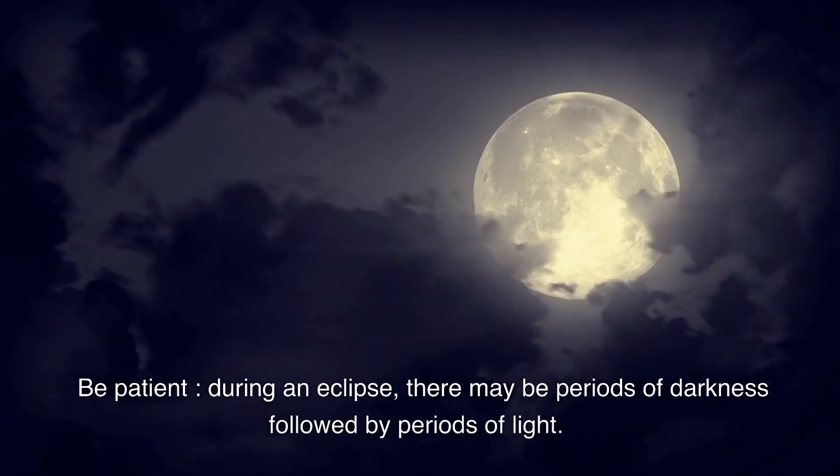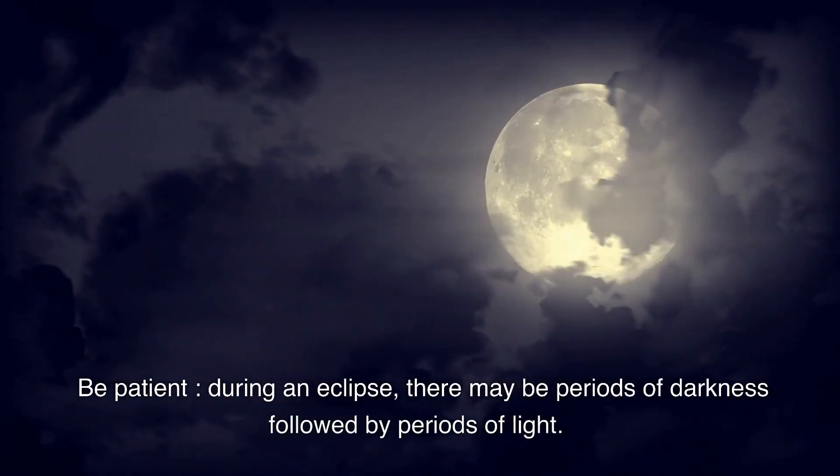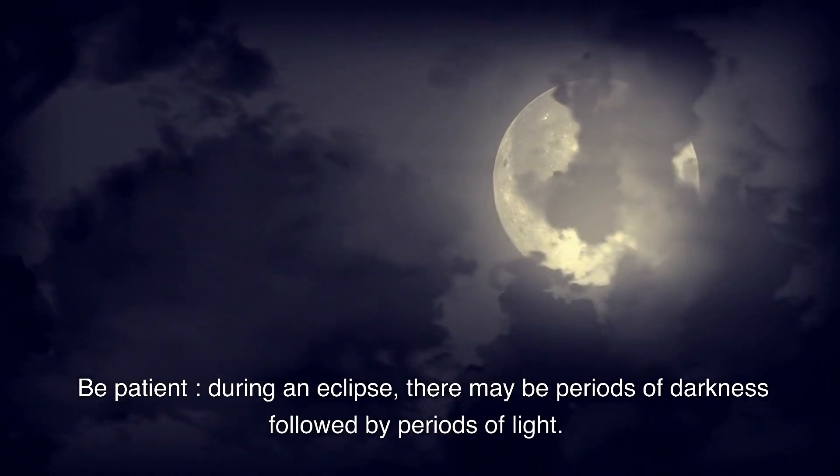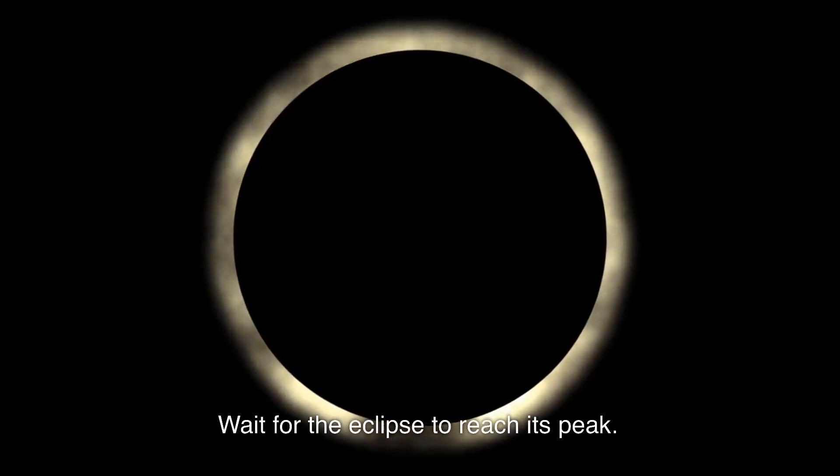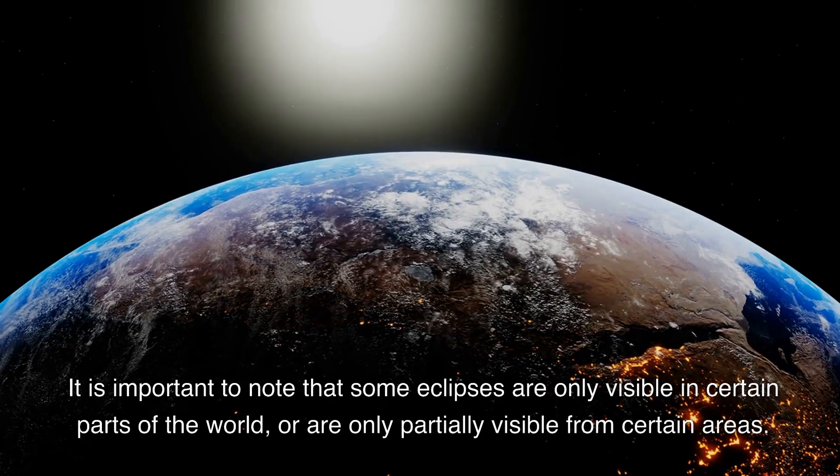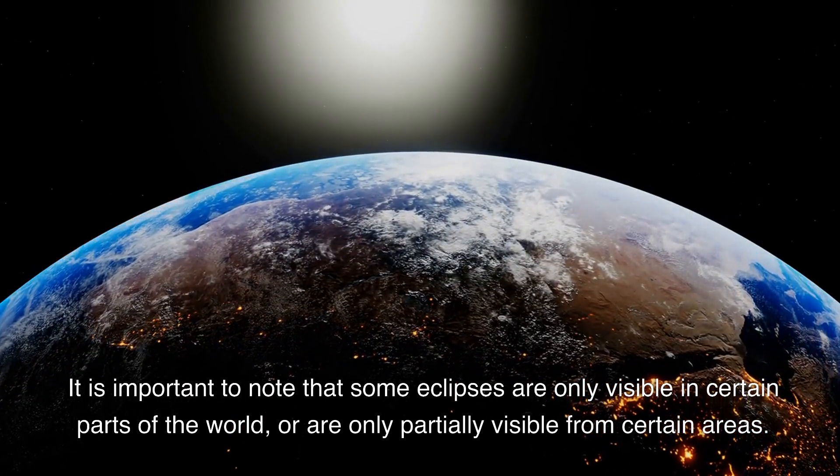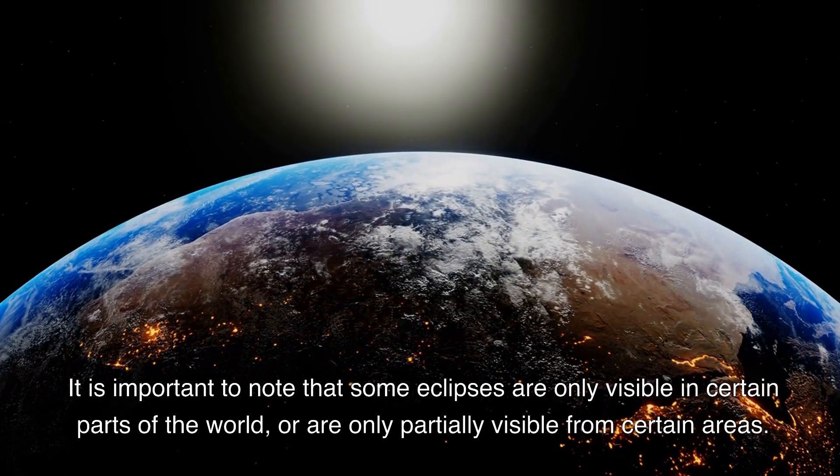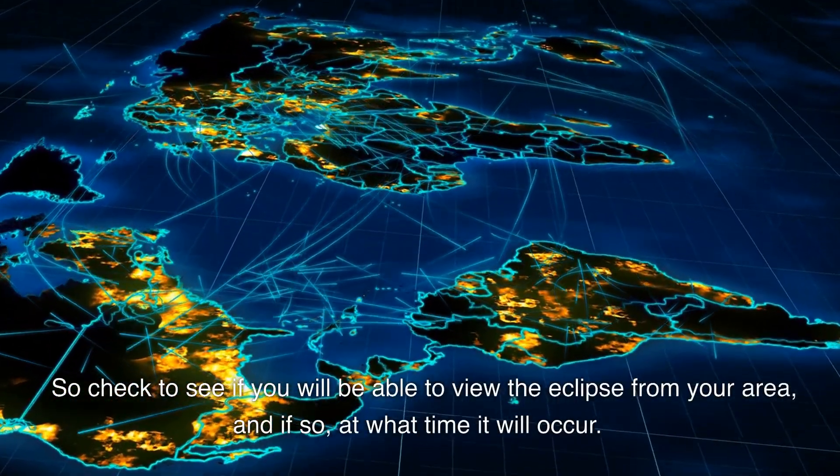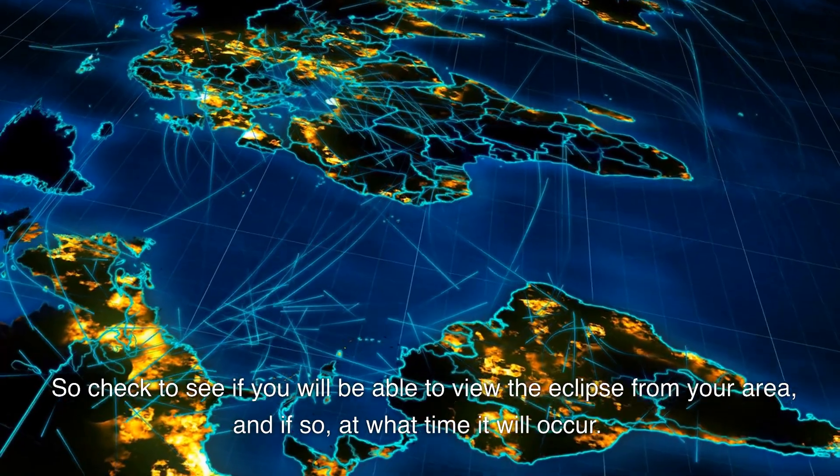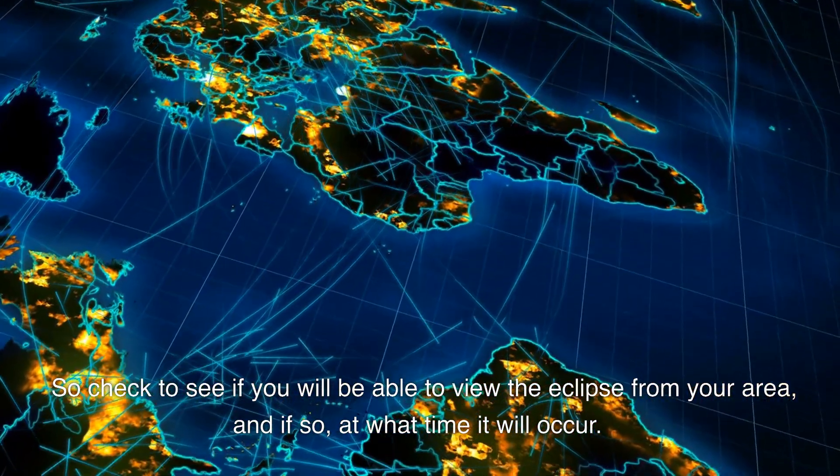Be patient. During an eclipse, there may be periods of darkness followed by periods of light. Wait for the eclipse to reach its peak. It is important to note that some eclipses are only visible in certain parts of the world, or are only partially visible from certain areas. So check to see if you will be able to view the eclipse from your area, and if so, at what time it will occur.